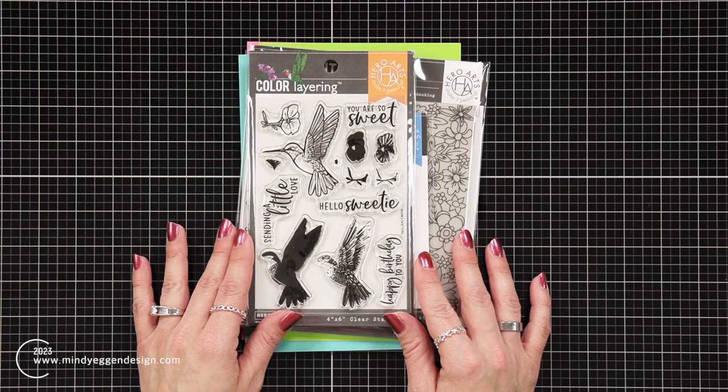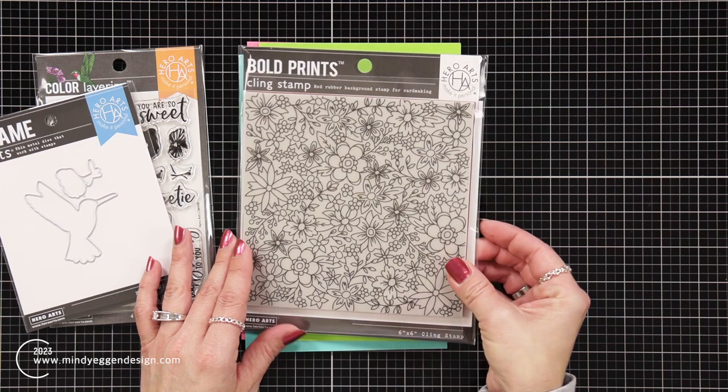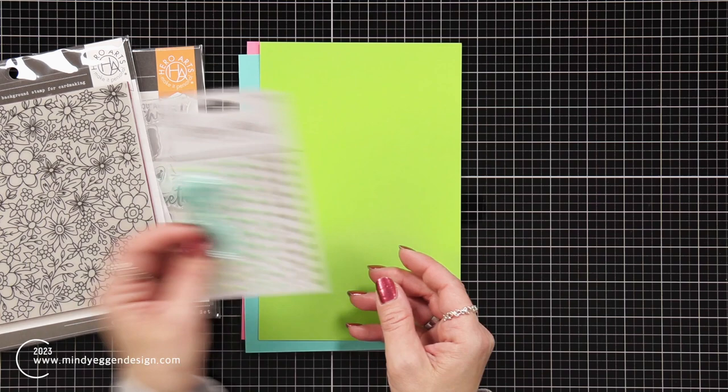First thing in the kit we have the Color Layering Hummingbird Stamp Set with this beautiful image that you can layer up with color along with some sentiments. There is the coordinating die, flowers for coloring bold print, some greens, enamel dots to embellish, and teal baker's twine.